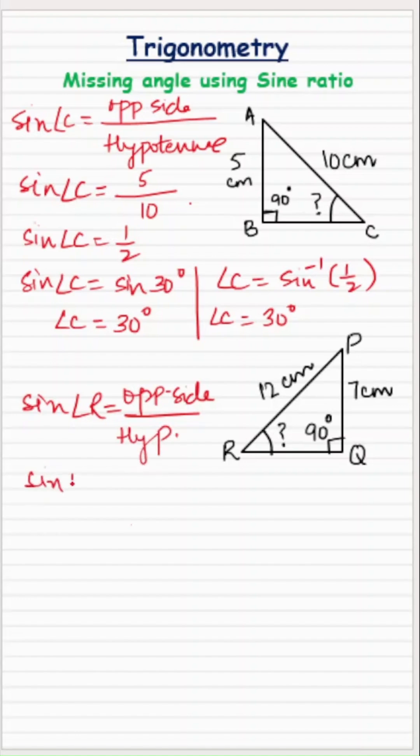So sine of angle R is equal to what is the opposite side to angle R? 7. What is the hypotenuse? 12. So again we will be using the inverse function.